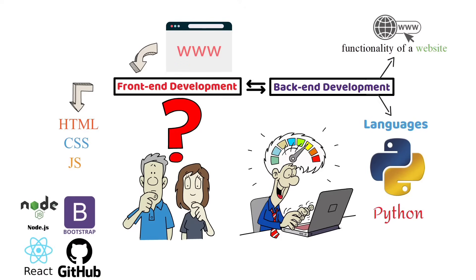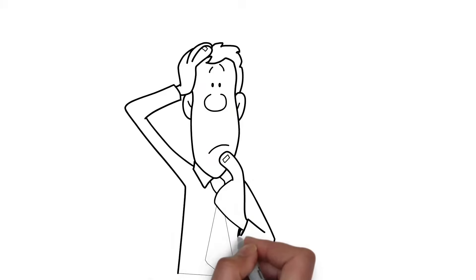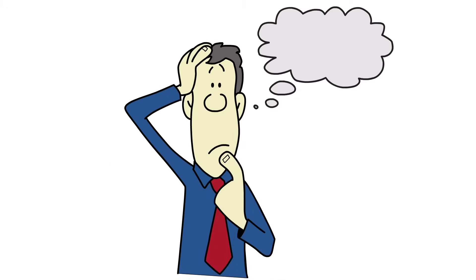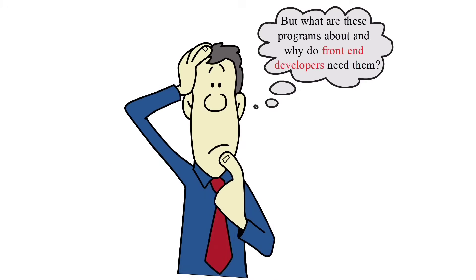However, the three main languages — HTML, CSS, and JavaScript — are really what you need to know as a front-end developer. But what are these programs about, and why do front-end developers need them?